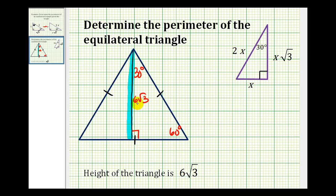So the longer leg of this 30-60-90 triangle has a length of six square root three. And that corresponds to the side that's labeled x square root three on our more general reference triangle. So this tells us that x square root three must equal six square root three. So if we solve this equation for x, we can use this to determine the length of each side of this equilateral triangle.